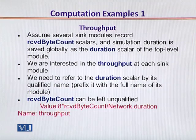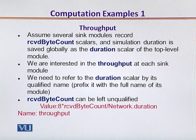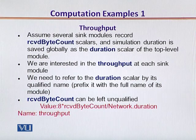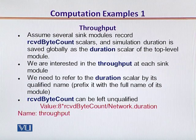Since this duration scalar is at the network level, we need to provide a fully qualified name for it. We assign the name 'throughput' to the computed scalar. The value is the received byte count converted into bits by multiplying by 8, and we divide it not by 'duration' but by 'network.duration'. 'network.duration' is the fully qualified name for the scalar value duration at the network level.